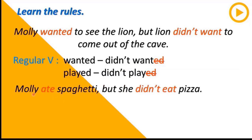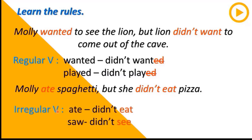If we talk about irregular verbs, the rules are a little different. 'Molly ate spaghetti but she didn't eat pizza.' When we change an irregular verb into negative, the irregular verb goes back to its first form. We write 'didn't' before the verb - for example: 'ate' becomes 'didn't eat,' 'saw' becomes 'didn't see,' 'gave' becomes 'didn't give,' 'felt' becomes 'didn't feel.' These are the rules of past simple negative.